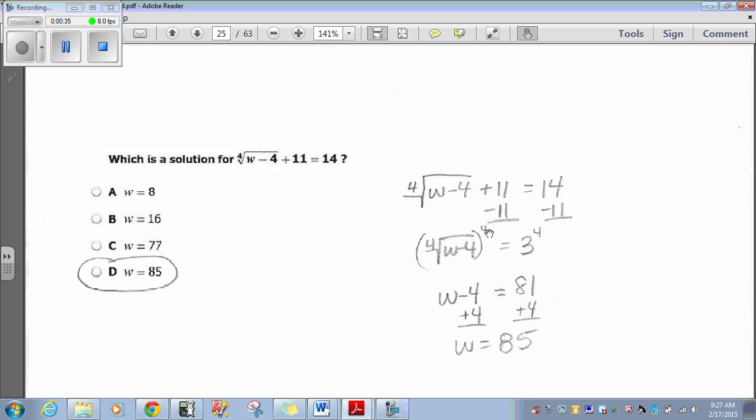Now, the fourth root of anything to the fourth is simply what's under the radical sign. So that's just w minus 4. Then 3 to the fourth power, 3 times 3 times 3 times 3 is 81. W minus 4 is 81. Add 4 to both sides. W is 85.